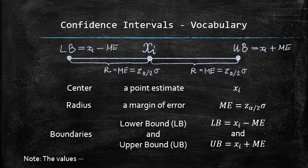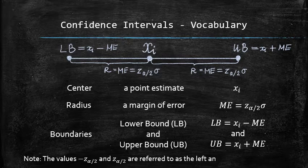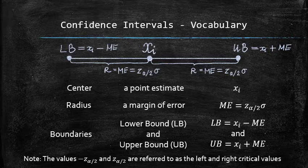Note that in this context, the values negative z sub α/2 and z sub α/2 are referred to as the left and the right critical values.